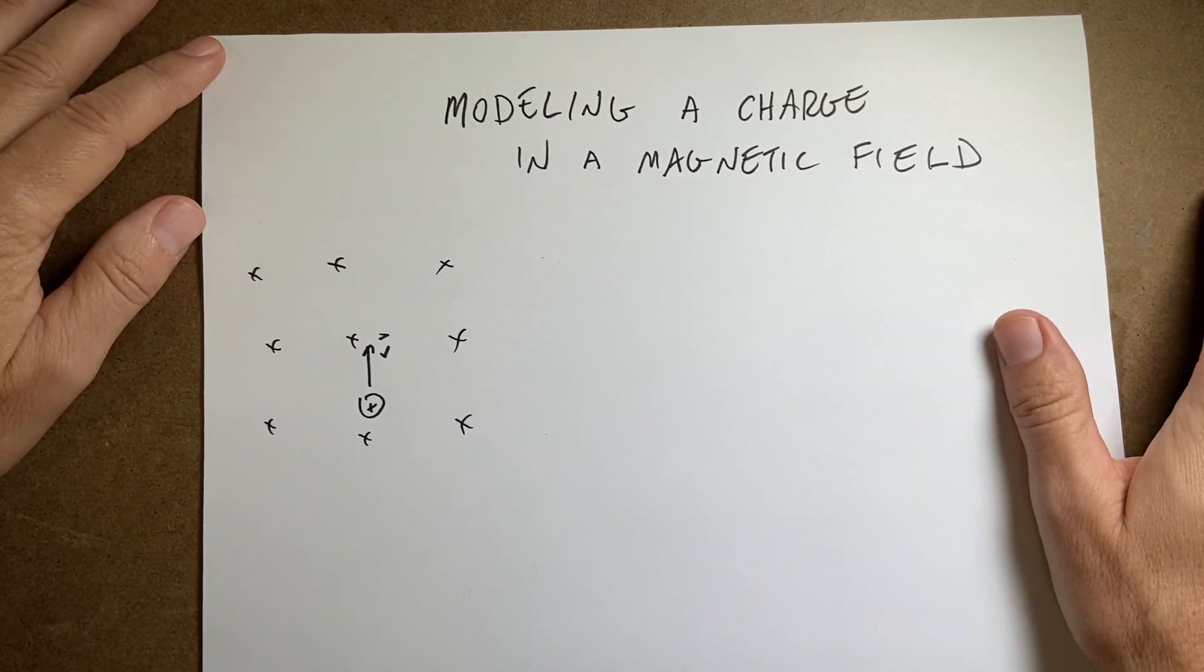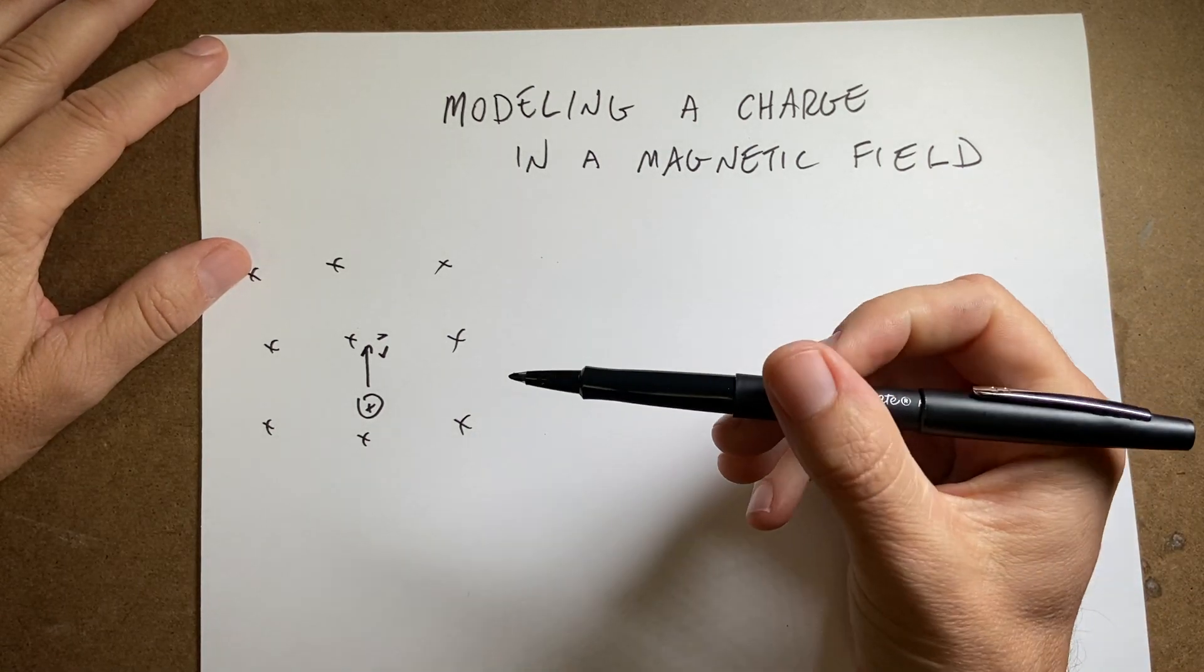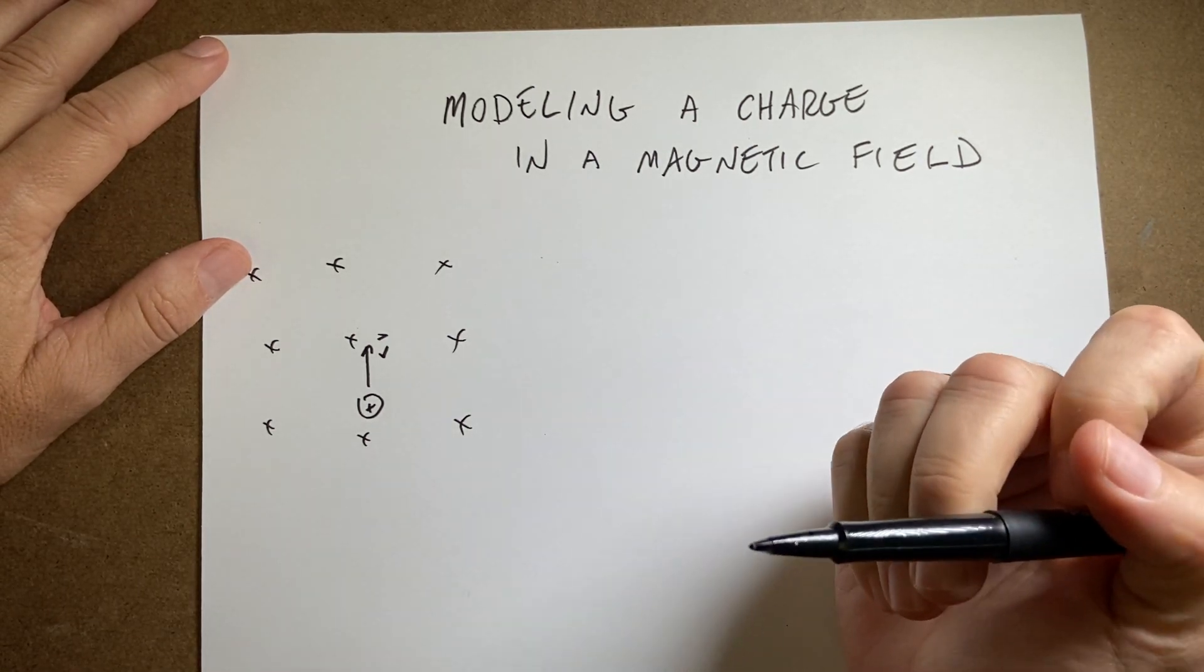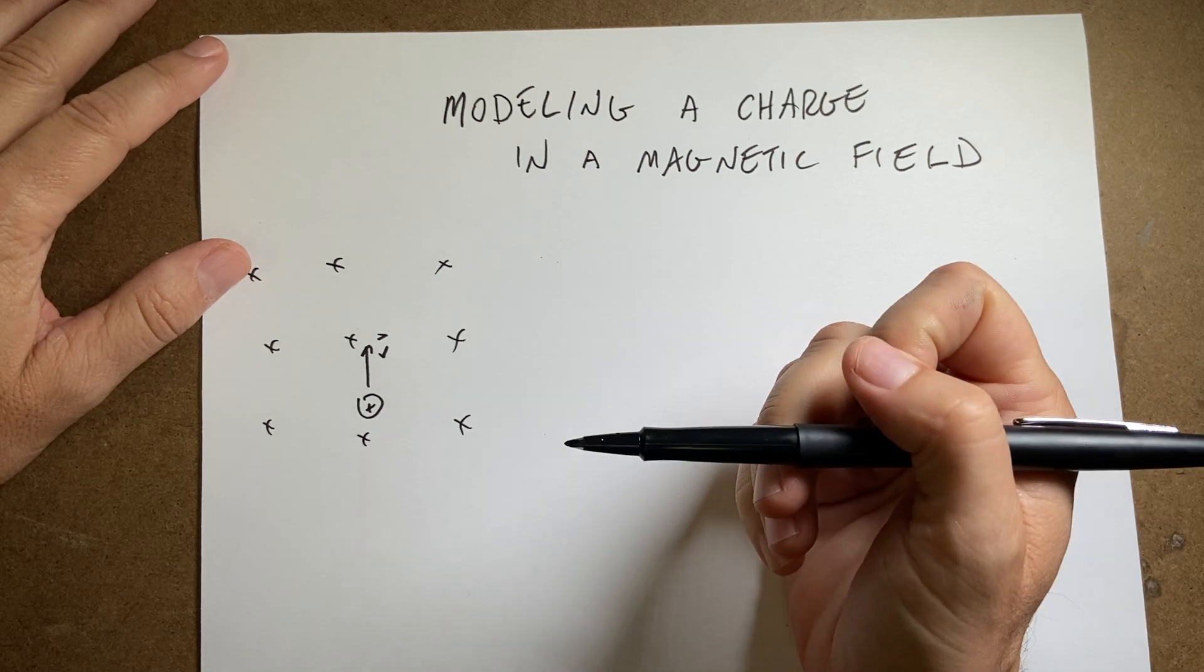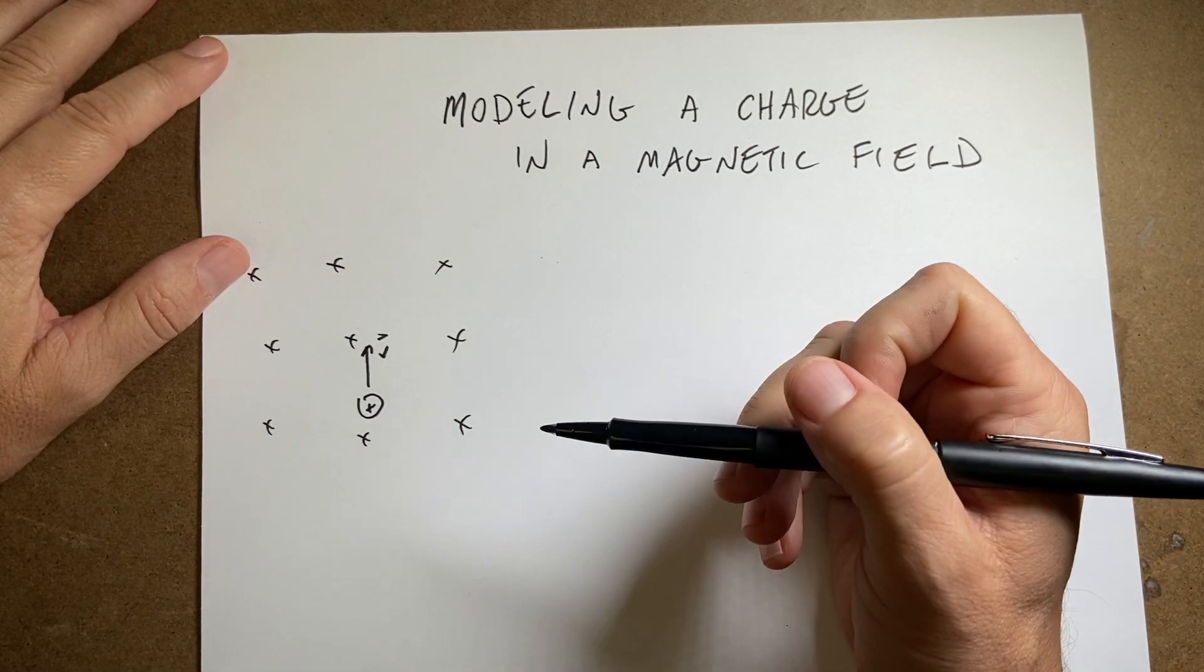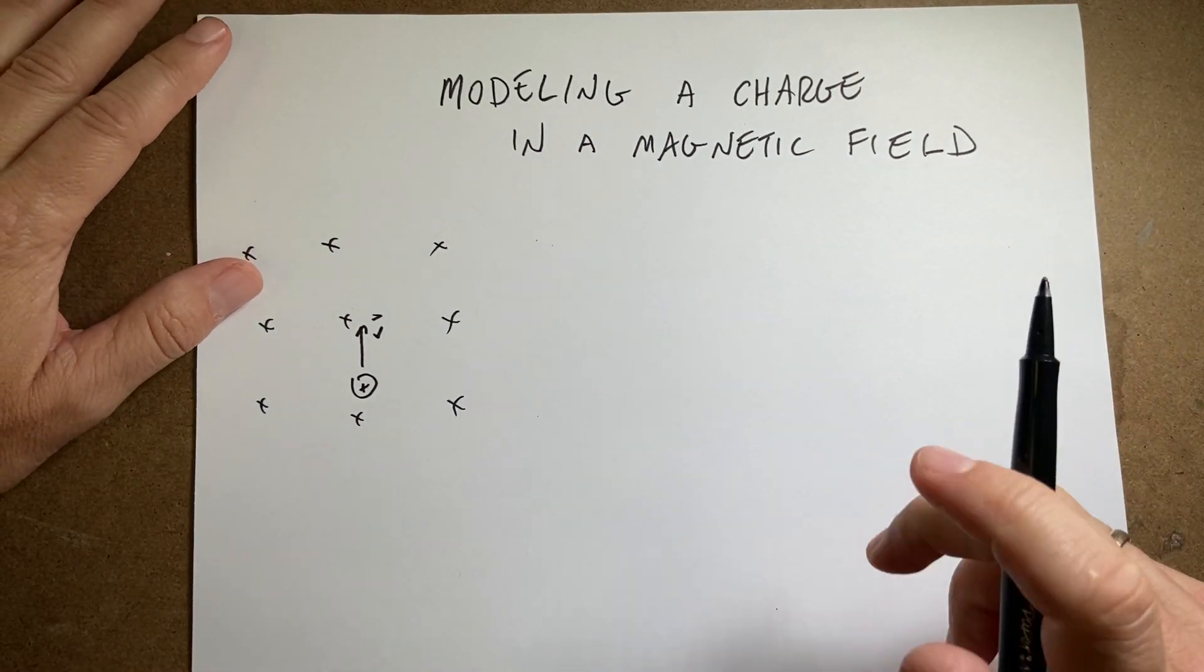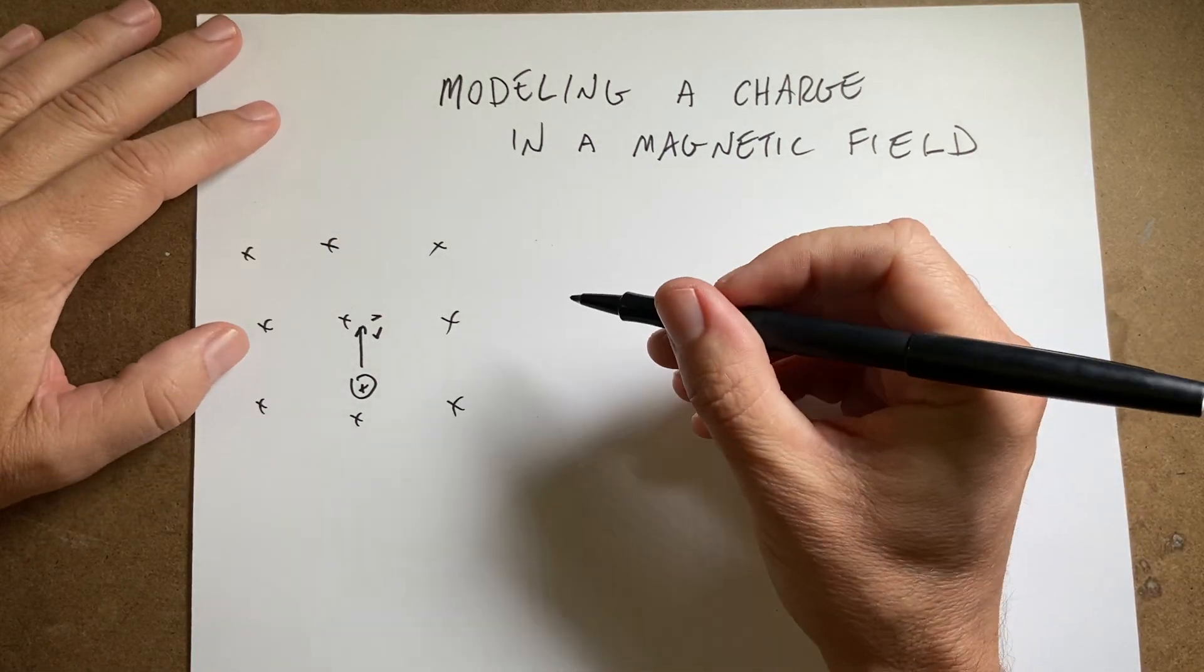Okay, so I've already shown that a charge moving in a constant magnetic field will make a circular path. But I want to actually model that motion and not just calculate it. So we need to do a little work before we build our model and we can visualize this. It's going to be great, trust me, it will be really great.